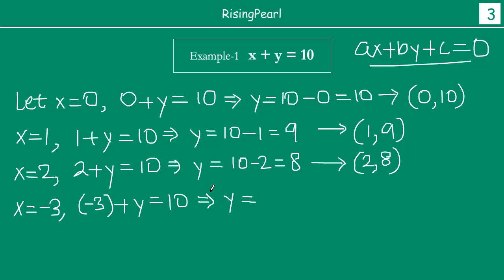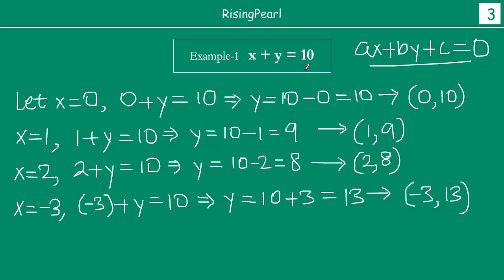If you take x equal to minus 3 in the equation x plus y equal to 10, you take minus 3 to the other side — it becomes plus 3. So y equals 10 plus 3, which is 13. Checking: minus 3 plus 13 is 10, which equals the right hand side. So x = minus 3 and y = 13 is another solution. From x going to plus infinity or minus infinity, for each value of x you get one value of y. So all these ordered pairs are solutions, meaning there are infinite solutions to any linear equation in two variables.